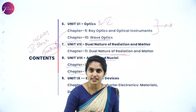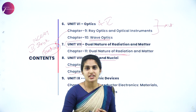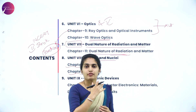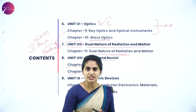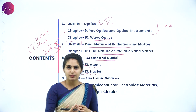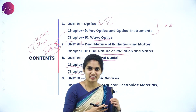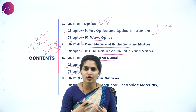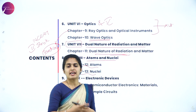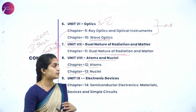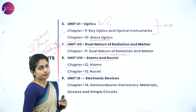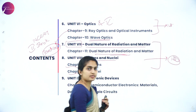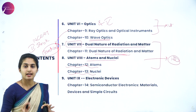Under Atoms and Nuclei, we study how radiation is produced — alpha, beta, and gamma radiations — how the particles were calculated, Rutherford's experiments, Bohr's atomic conditions, all its drawbacks, Bohr's atomic model postulates, isotopes, isobars, isotones, radioactivity decay law, and the radius of the nucleus. Units seven and eight together are allotted 12 marks.